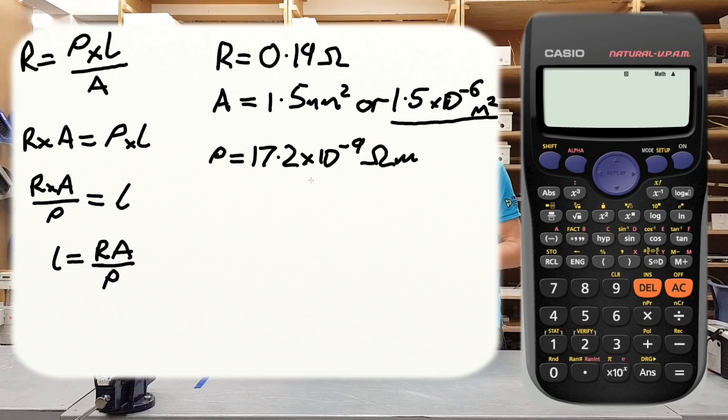So now we've got all of our numbers in place, so we're going to use this number, this number, and this number. We'll put those into the calculation and see what we end up with. So we'll start that again. We're going to say that the length of the conductor will be equal to the resistance 0.19 times by the cross-sectional area, which is 1.5 × 10^-6, and then we're going to divide that whole thing by 17.2 × 10^-9. So that's what we're looking at there. So we can now put this into our calculator and figure out what the length of the cable should have been. So we'll head over to our Casio FX-85 GT Plus, beautiful calculator as it is, and we'll put that in.